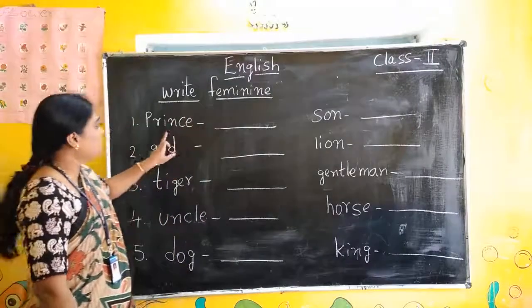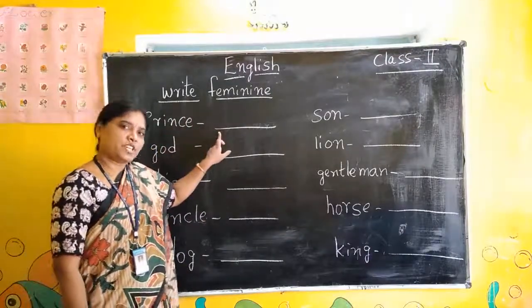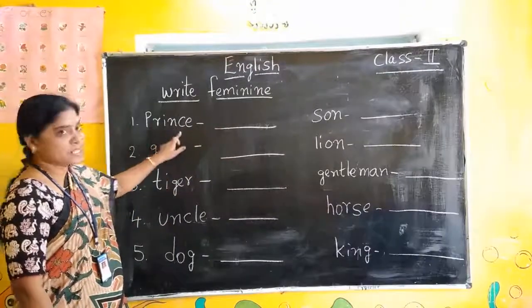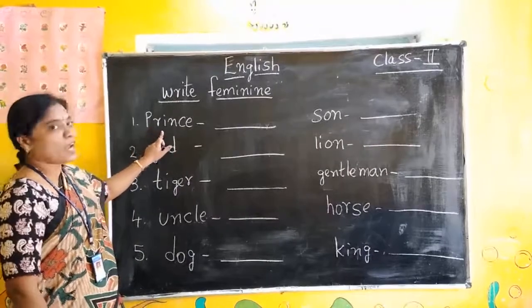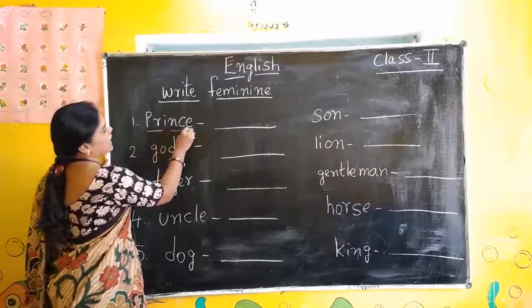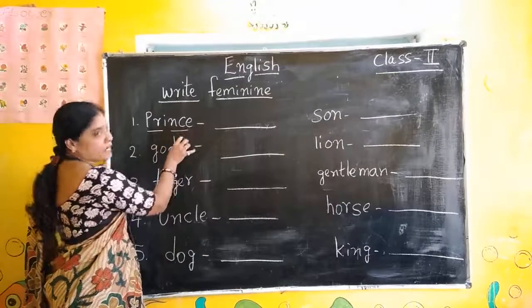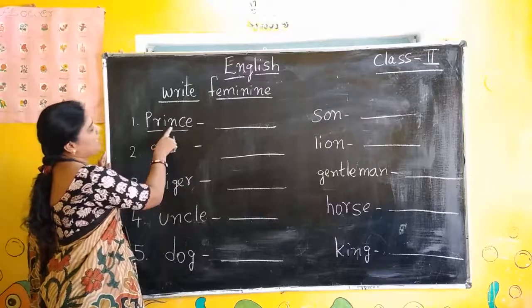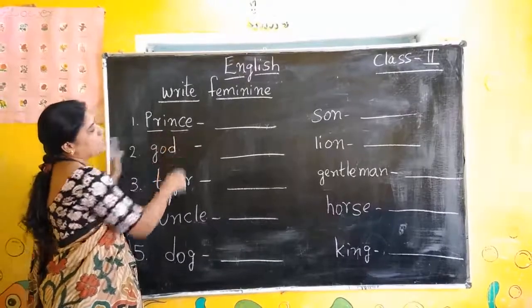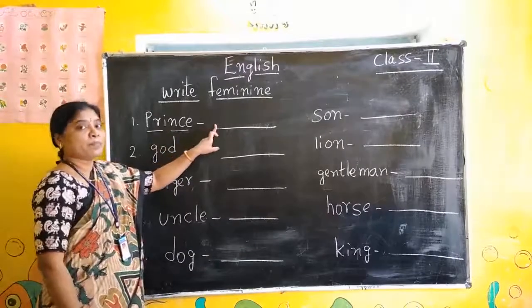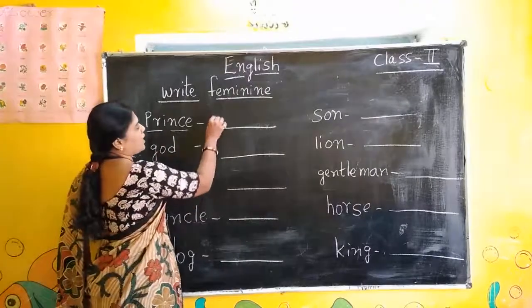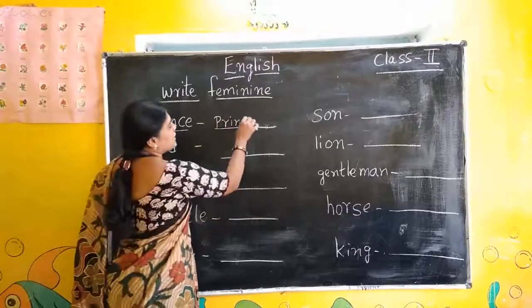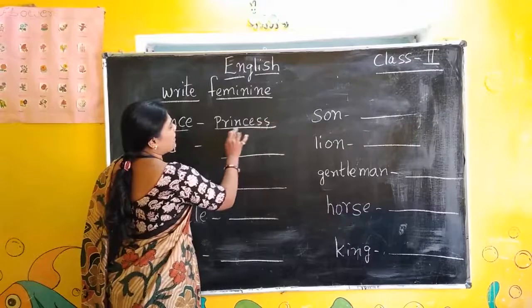Feminine form — here he words are given, we have to write the she words. P-R-I-N-C-E, Prince. You have to learn with spelling. P-R-I-N-C-E, Prince. What will come next? Princess. P-R-I-N-C-E-S-S, Princess.